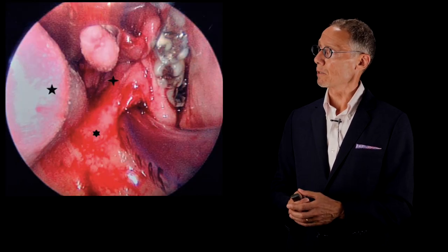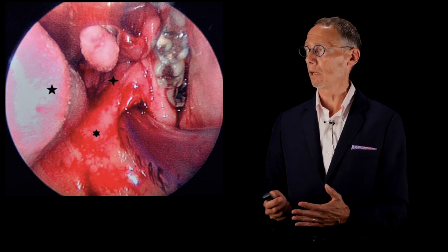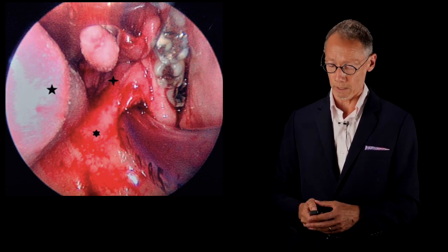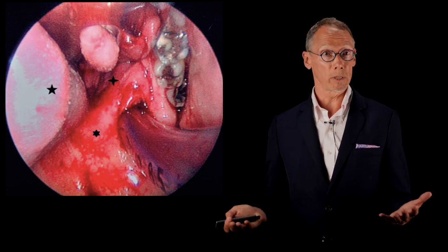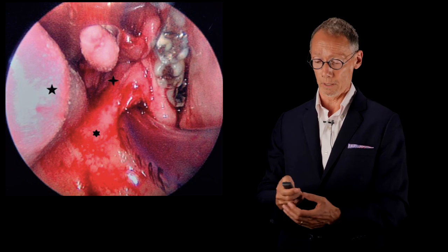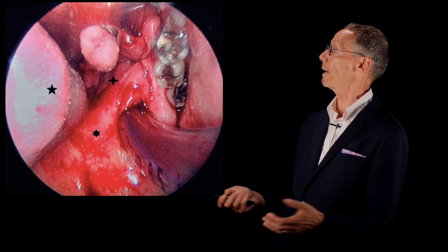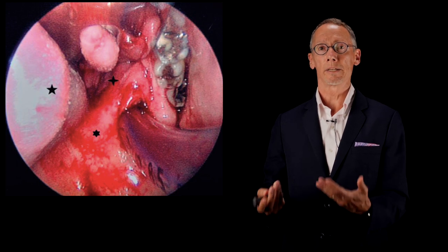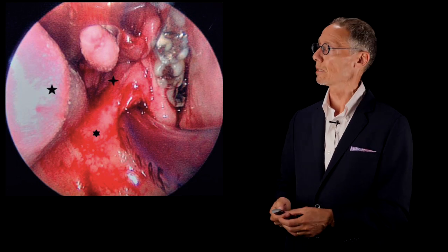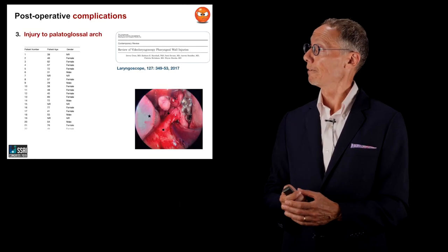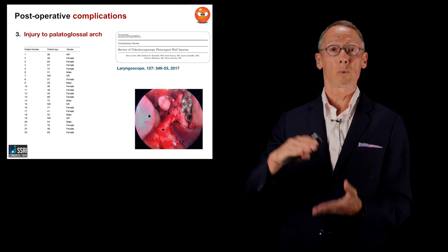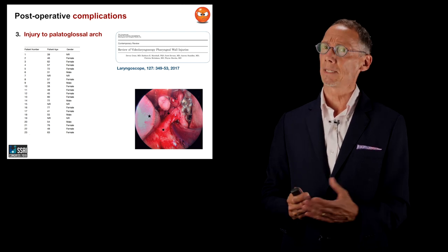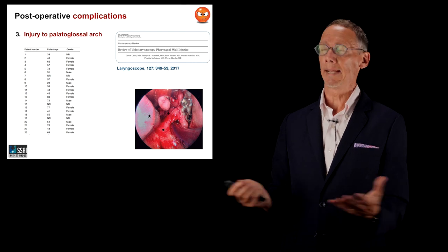Finally regarding postoperative complications, I wish to address injury to the palatoglossal arch — a complication occurring specifically with hyperangulated video laryngoscope blades. It's not life-threatening, but it makes you look bad to the patient, your colleagues, and the ENT surgeon to whom the patient gets referred. It is a particular risk when dedicated rigid stylets are used with an endotracheal tube for hyperangulated video laryngoscopy. A 2017 review brought together 23 published case reports of this injury — 23 case reports on any single complication is a lot.